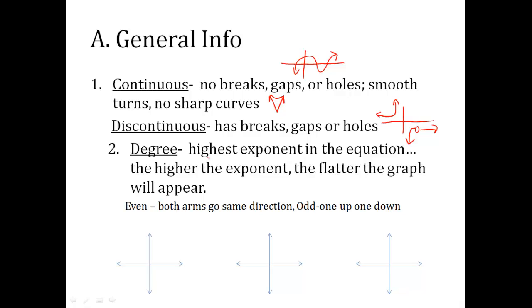The degree of a function is found by looking at the highest exponent in the equation. The higher the exponent, the flatter the graph is going to be. So if I gave you an example, 3x to the 6 plus 2x to the 5 plus 4, I would read this and realize, okay, here's my highest exponent. That tells me a lot about what the graph would look like.